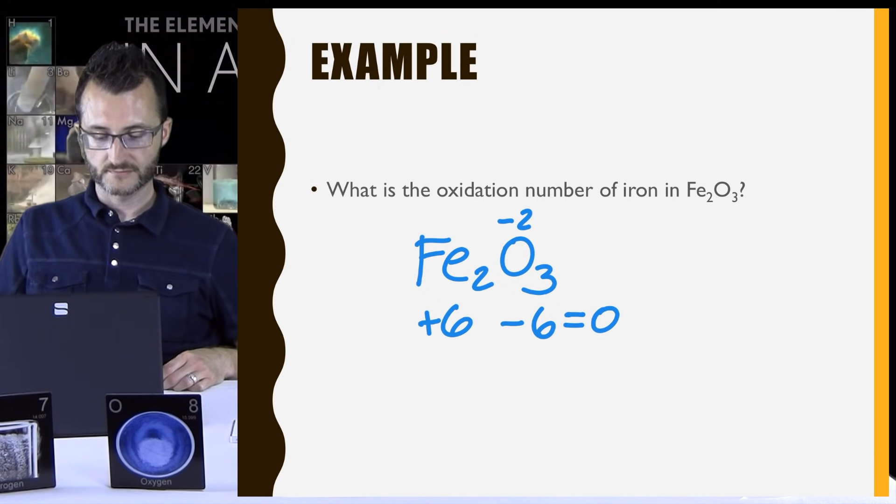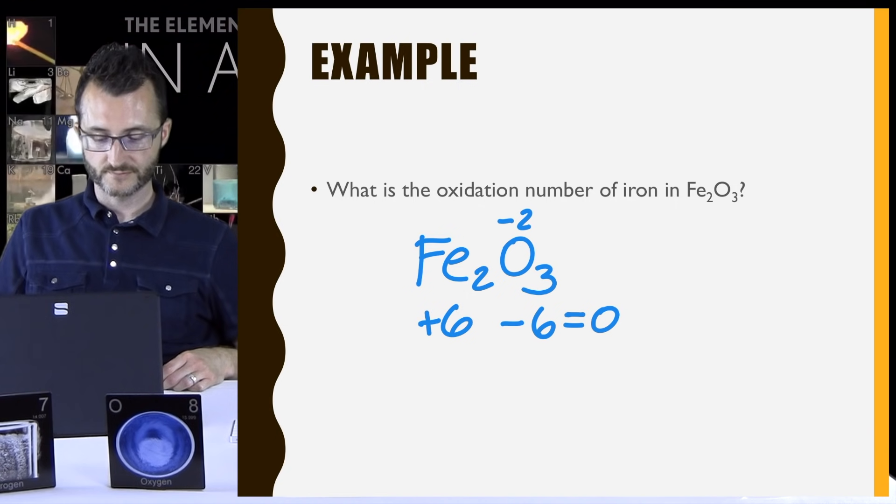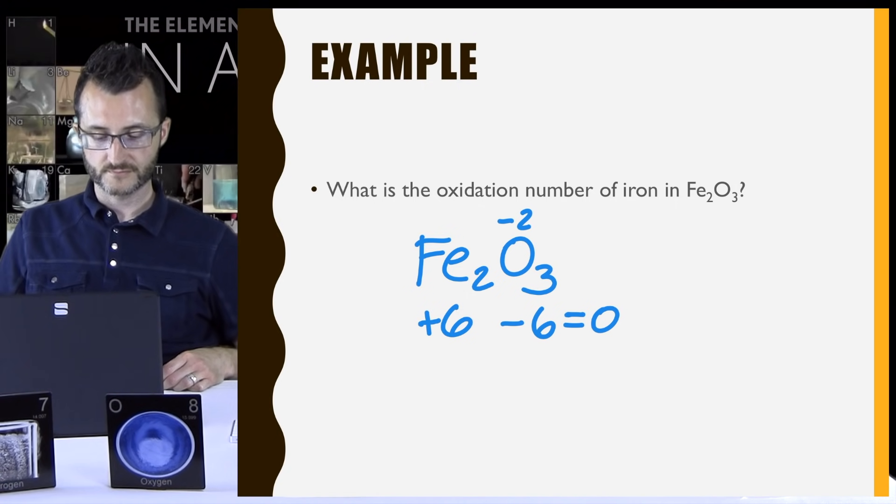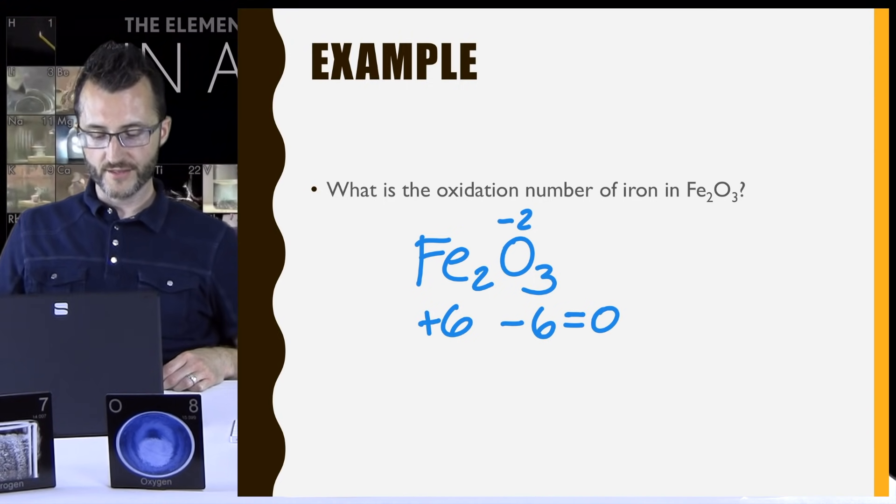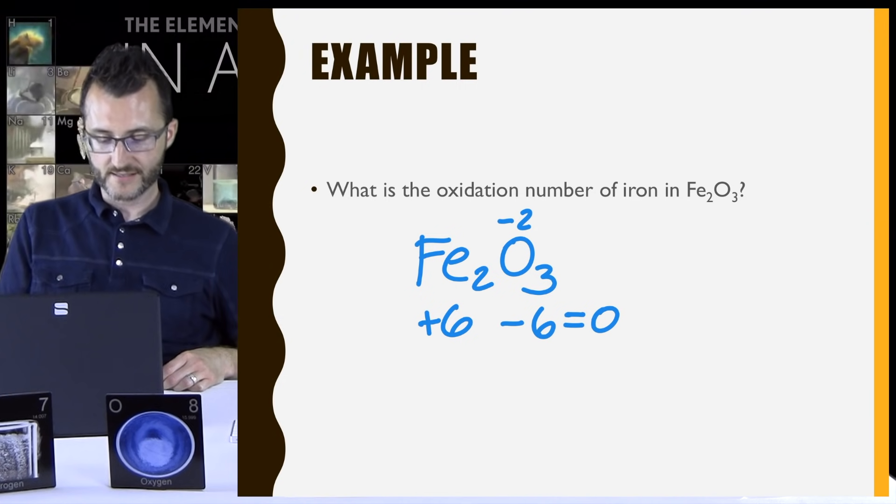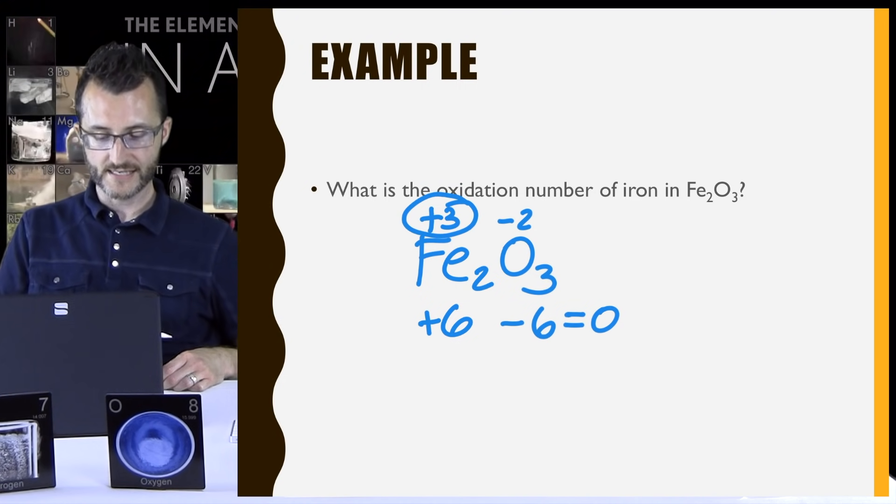All right. So in this formula, how many irons do I have? Well, there's two of them from the subscript. So if there are two, and they both have to have a total overall charge of positive 6, what's the oxidation state of each one? Well, I know that 3 times 2 is 6, so they each have to be plus 3. Good. And that's my oxidation number for iron.